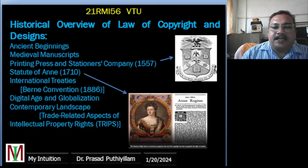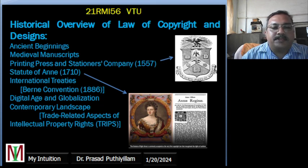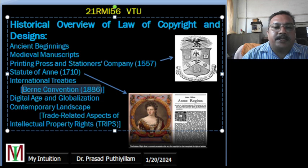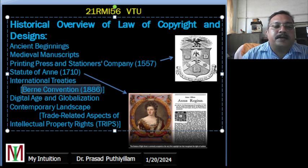In the 19th and 20th centuries, international treaties aimed to standardize copyright laws. One example is the Berne Convention of 1886, along with other agreements that sought common ground for protecting copyrights among participating countries.